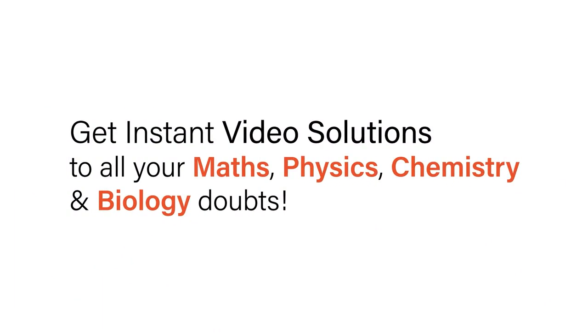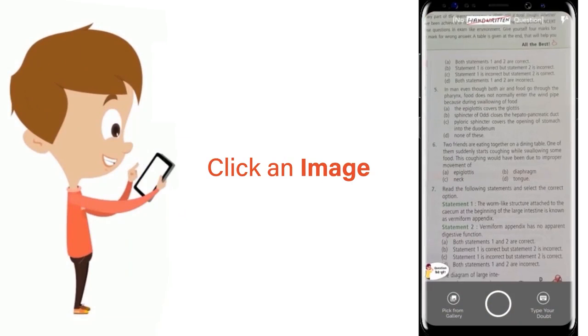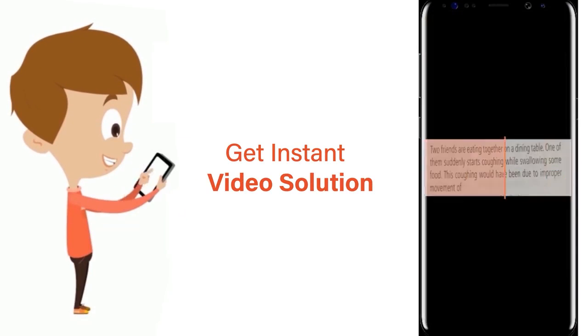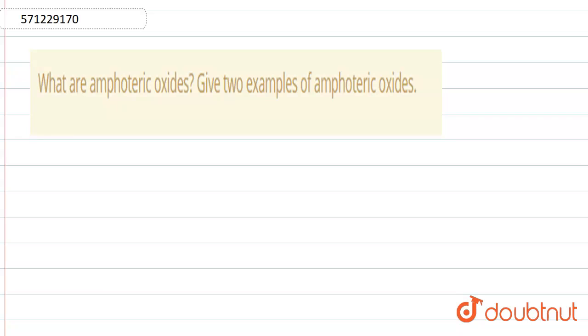With Doubtnet, get instant video solutions to all your maths, physics, chemistry, and biology doubts. Just click the image of the question, crop the question, and get instant video solution. Download Doubtnet app today. Hello, the question is: What are amphoteric oxides? Give two examples.